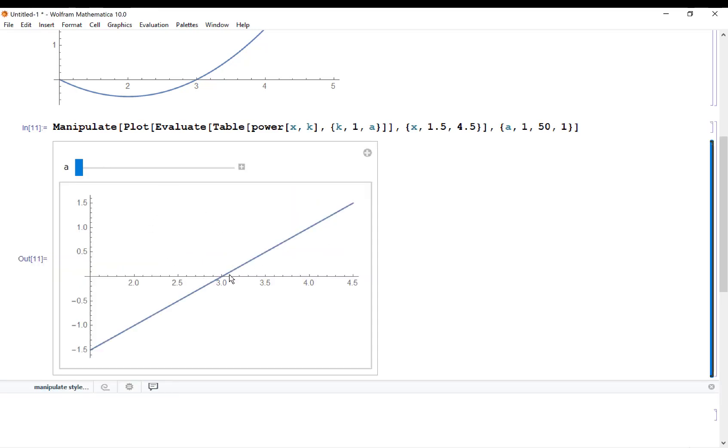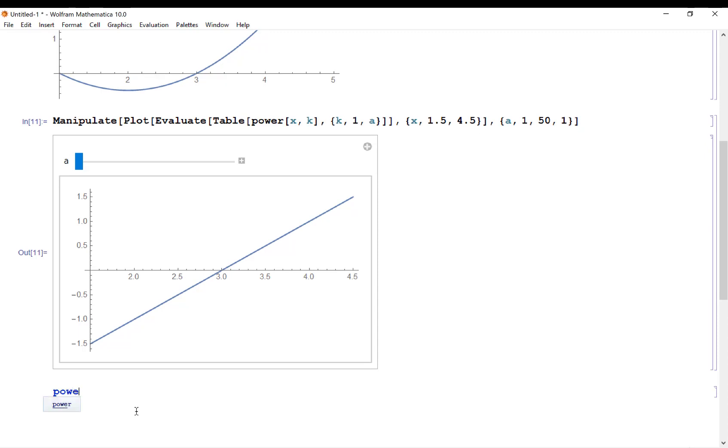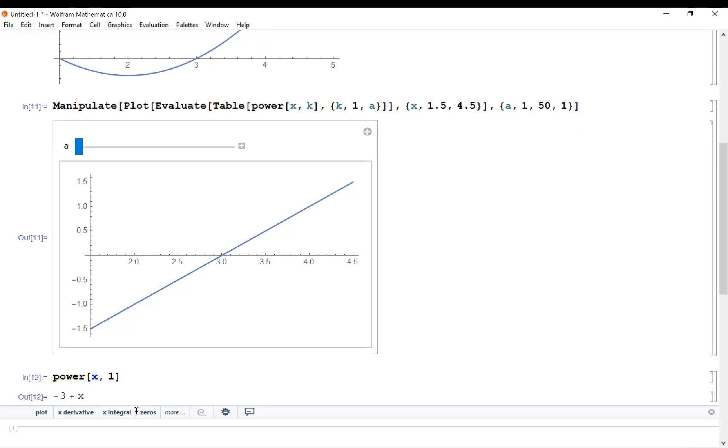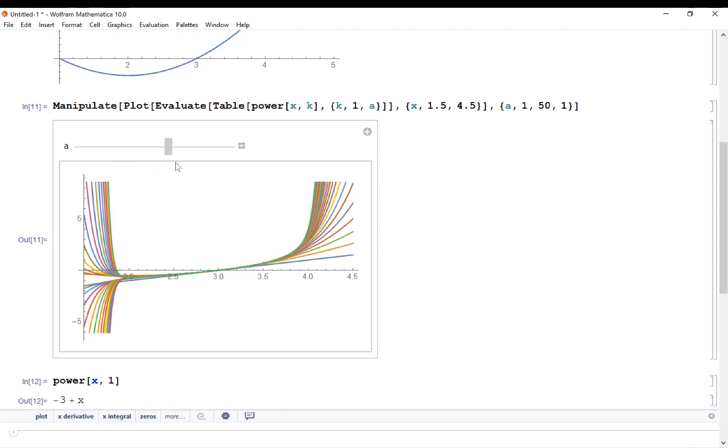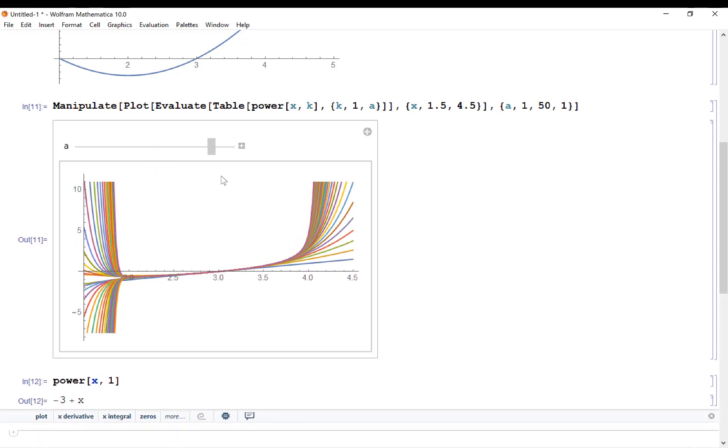So when I calculate this, I start off with just a linear function, because that's the first partial sum of my power series, right? That's px1, which is x minus 3. So as I go, there's my first 2, first 3 and 4 and 5 and so on. And I'm doing 50 of these things. So as I drag it, we can see what's going on.